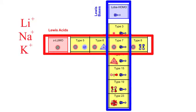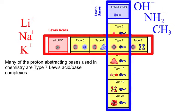The S Lumo Lewis acids include species such as the lithium cation Li+, the sodium cation Na+, and the potassium cation K+. The Lobe homo Lewis bases include species such as the hydroxide ion OH-, the nitride ion NH2-, and the methyl anion CH3-. These cations and anions interact to give type 7 Lewis acid base complexes.